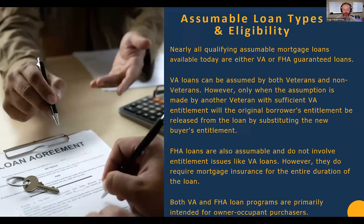However, if an assumption occurs and goes veteran to non-veteran, the entitlement that the original borrower used to get that loan — which they are qualified to use because they served our nation — will remain tied to that loan until it is paid off. The veteran who sold that home is released from liability. But entitlement works a bit like a dollar value, and they may not have used all of their entitlement, so selling to a non-veteran doesn't mean they cannot get another VA loan in the future.